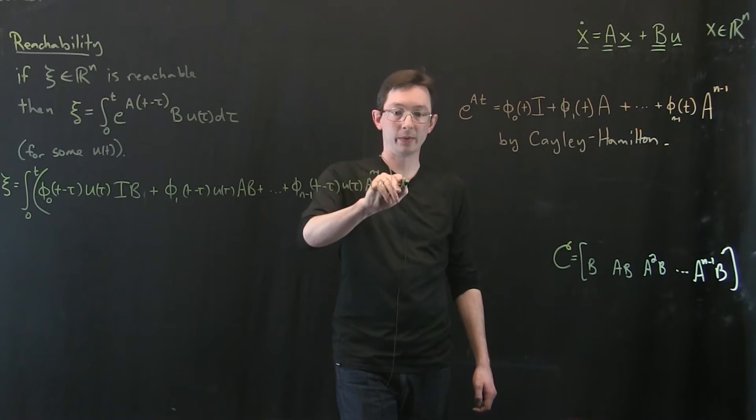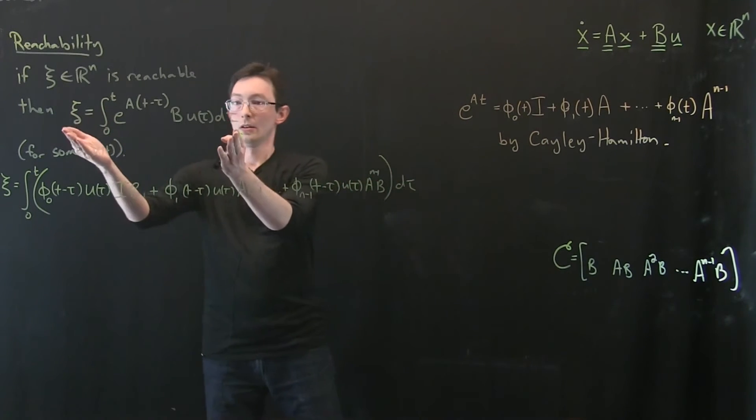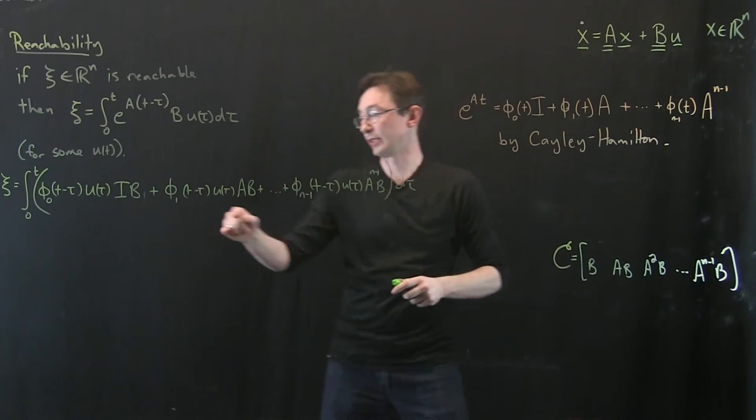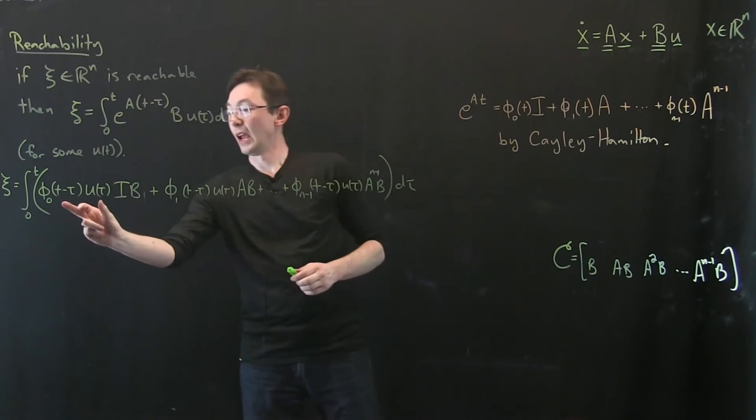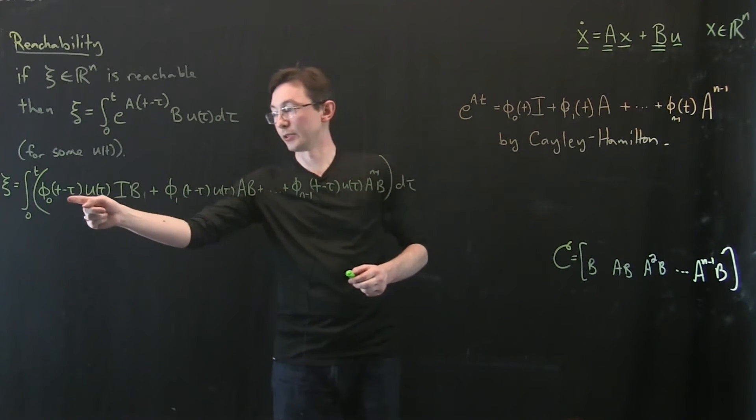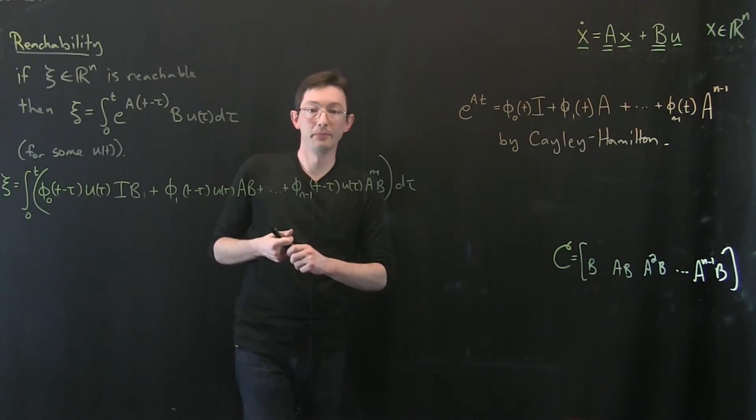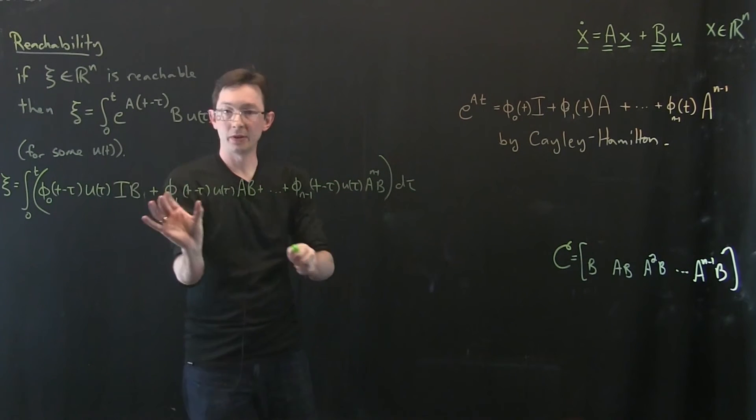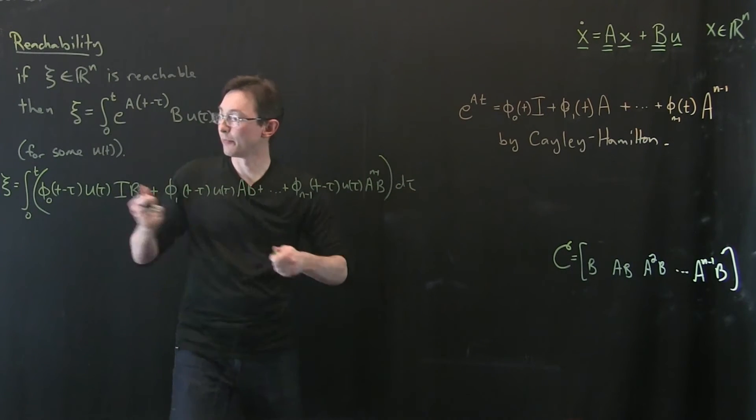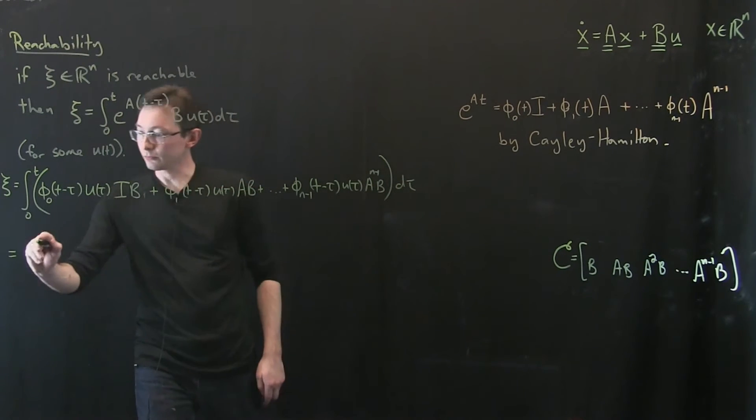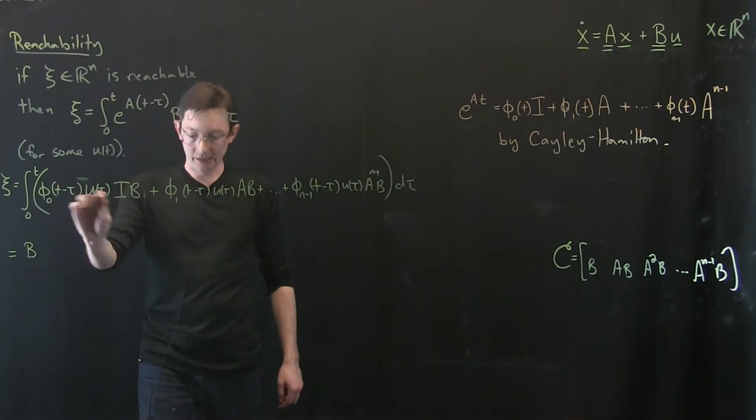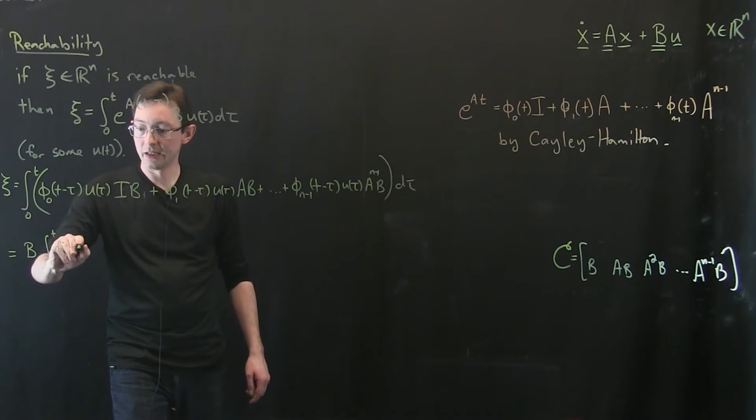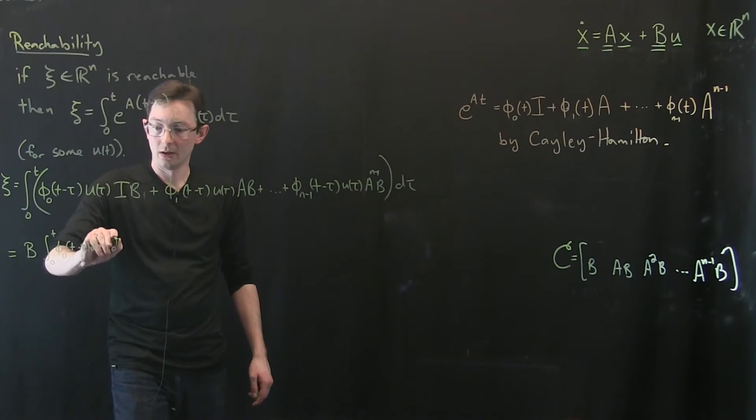So notice that I've taken this relatively nasty convolution integral, and because I can plug in this finite sum of matrices, I have a finite set of terms, and these are just scalar convolutions, right? The convolution of φ with u. And since I'm integrating with respect to τ, and these matrices are not τ varying, I can break this up into a bunch of integrals and pop those matrices out front. So this one is going to equal b matrix times this integral, which I'm just going to say integral 0 to T, φ₀(T-τ) u(τ) dτ.